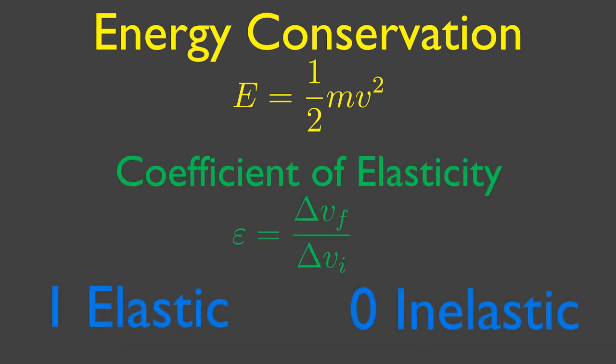1 means energy is completely conserved, a perfectly elastic collision. 0 means that the objects do not come apart after the collision at all. The final velocities are the same, and the maximum energy was lost.